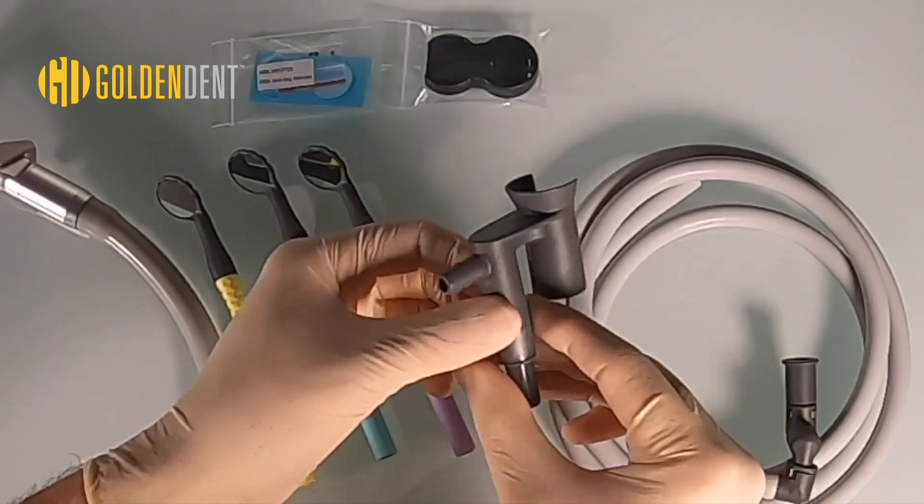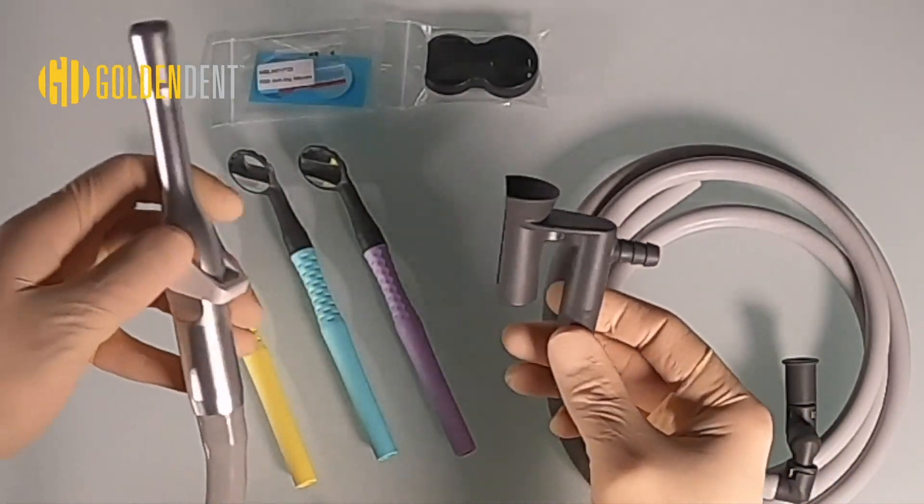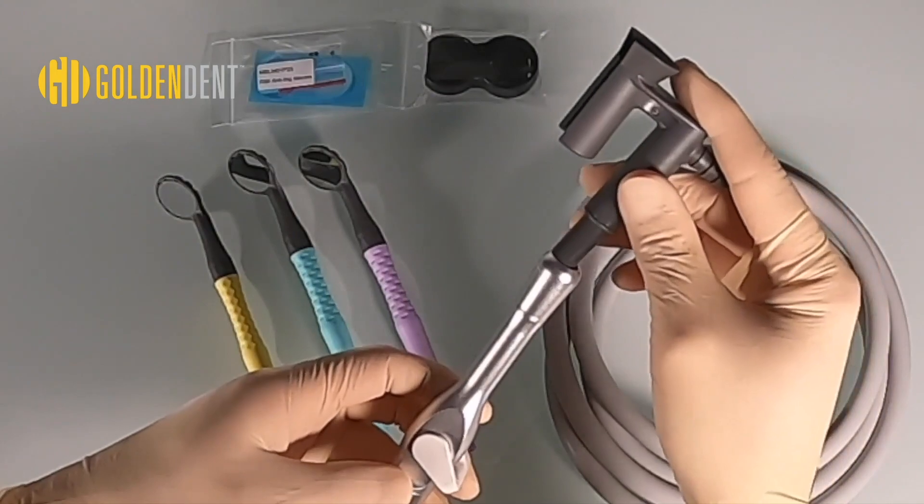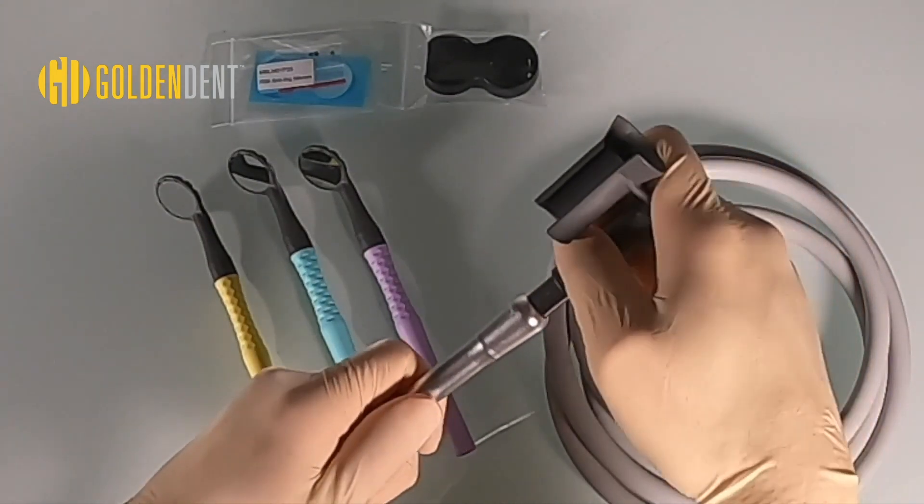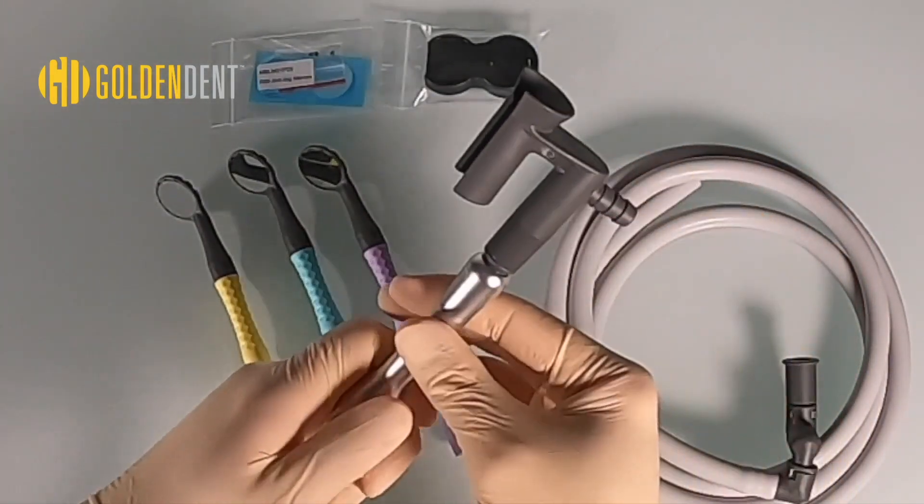This is the HVE adapter and mirror holder that slide into the top of the HVE suction. Our M7 mirror handles, tubing, and hookups are fully autoclavable.